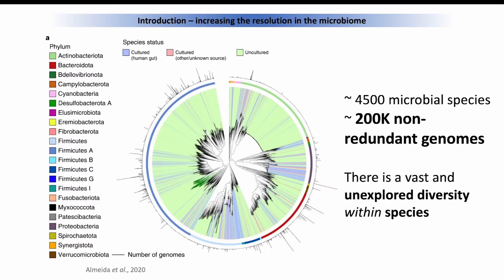This is a huge problem to solve if we take a look at the massive microbial diversity that we can harbor in our guts. In a very recent paper, they characterized the potential number of species that might populate our guts, with around 4,500 species. But more importantly, and especially more striking, is that they found more than 200,000 non-redundant genomes. This has a profound implication since within the same species we can find a huge genetic diversity that must be explored. We might find that species can have many, many strains, and those strains can be very different between them.